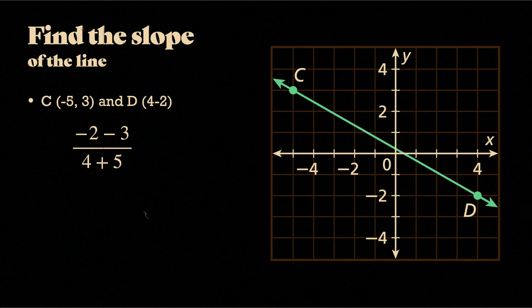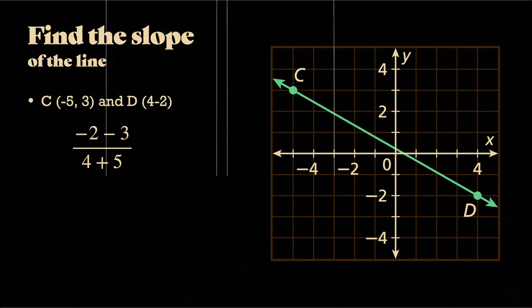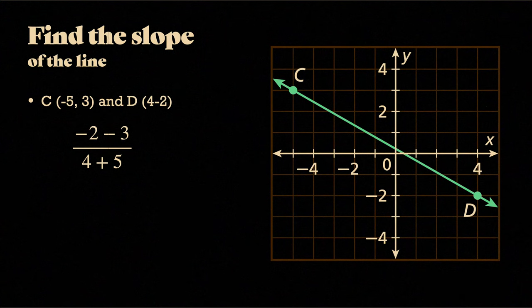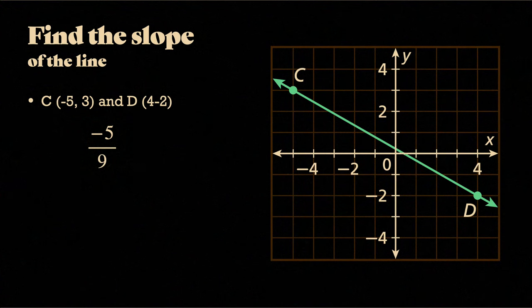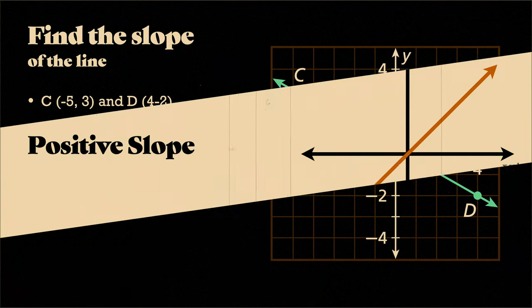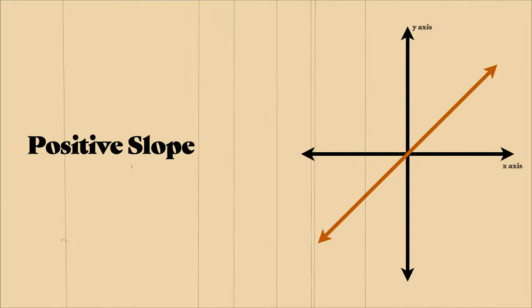All right, from there, what I do is I just do a little bit of quick math. So negative 2 minus 3, that's 3 more, so that's negative 5, and 4 plus 5 is 9. So we get negative 5 over 9 or a slope of negative 5 over 9. All right, so let's talk about some different types of slopes.